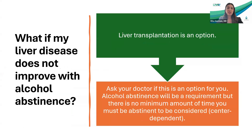What if, despite your best efforts, the liver disease does not improve with abstinence? Liver transplantation is an option. Alcohol abstinence is absolutely a requirement, but there's no minimum amount of time you must be abstinent before consideration for liver transplantation. This is sometimes center-dependent, however most patients will be considered for at least evaluation and consideration for transplantation — and that's always something you should ask about.